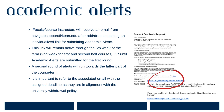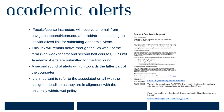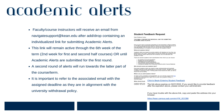Each faculty and course instructor will receive an email from navigatesupport at caine.edu containing an individualized link for submitting their alerts. This link will remain active through the expiration of the alert cycle or until alerts are submitted. A second round of alerts will occur towards the latter part of the term — please be on the lookout for specific dates. Finally, it's important to reference the dates included within the body of the email you receive, as the deadline revolves around the withdrawal policy at Caine University.